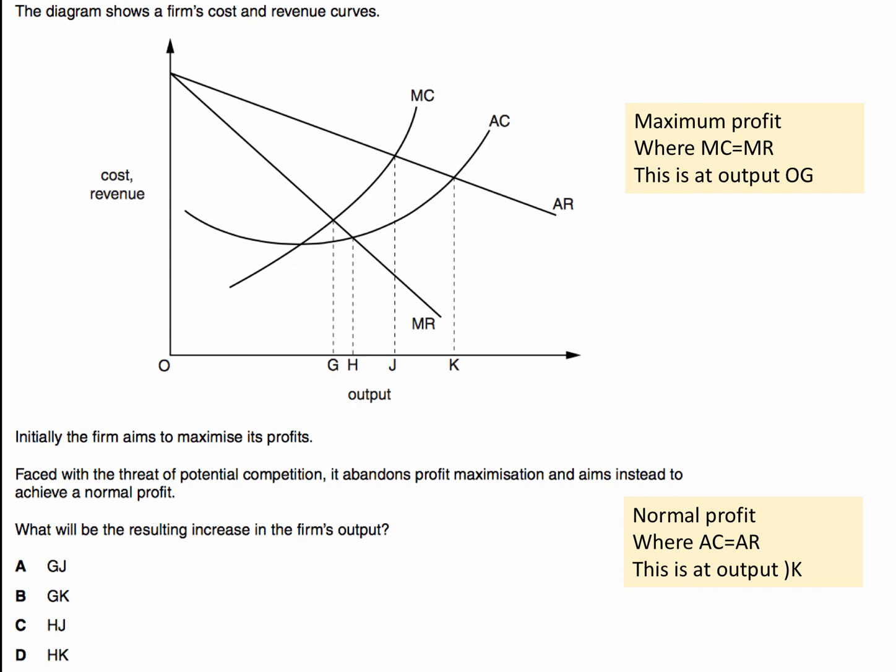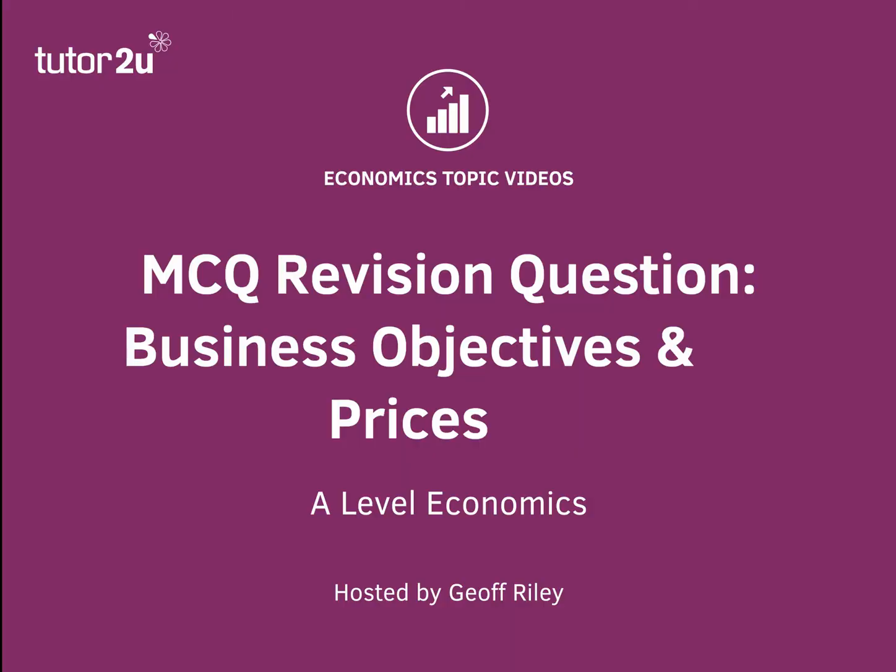So what's the resulting increase in the firm's output? Well, we're going from OG to OK, so the increase in output is GK. Good!